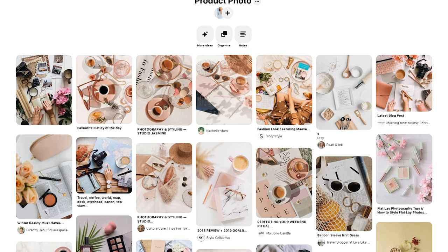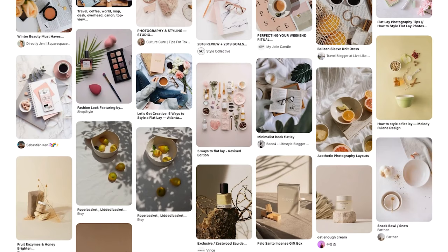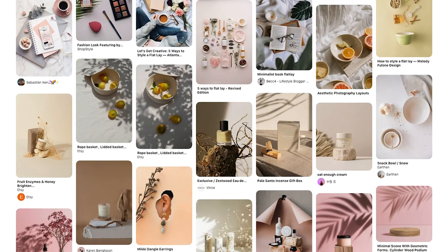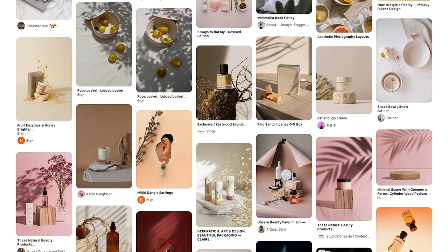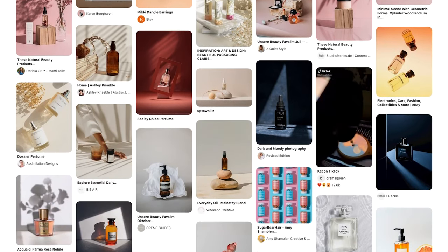A styling board is basically the background or the backdrop of a flat lay. And a flat lay is a picture taken from above of some products or objects that you want to showcase. And it is mostly used for fashion or product or food photography.